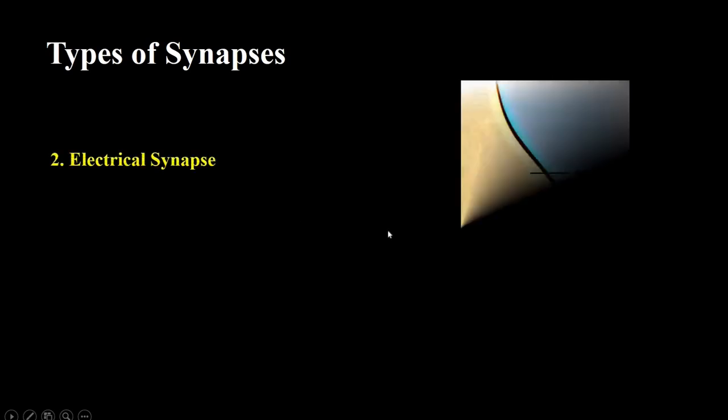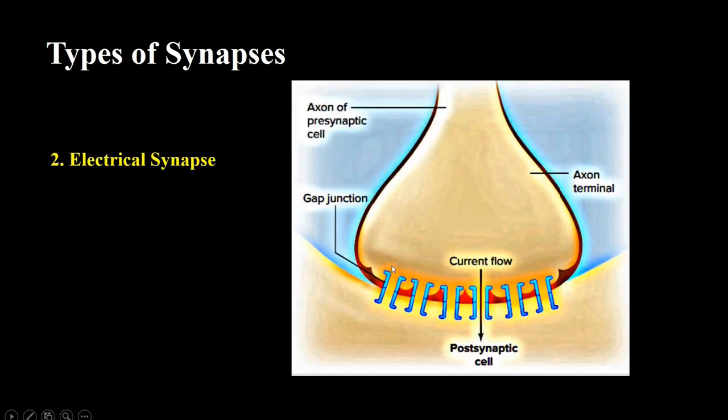In this type of synapse, two neurons are connected by specialized channels known as gap junctions. And these electrical synapses allow the electrical signals to travel quickly from the presynaptic cells to the postsynaptic cells, which rapidly speeds up the transfer of signals.